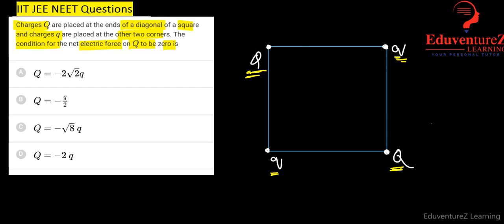If capital Q is negative, then this capital Q is also negative. So both will repel each other like this force F1. This is negative, this is positive, so there will be attraction. This is positive, this is negative, so there will be attraction. So this one is F and this one is F. Both are at an angle of 90 degree.